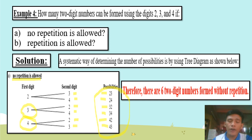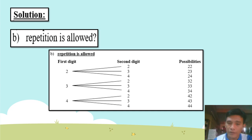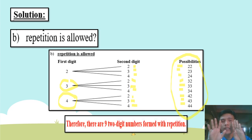For letter B, repetition is allowed. Starting with 2, the possibilities are 22, 23, 24. Starting with 3, the possibilities are 32, 33, 34. Starting with 4, the possibilities are 42, 43, 44. Therefore, there are nine two-digit numbers formed with repetition.